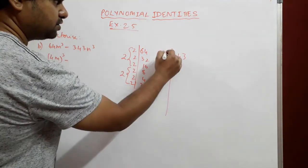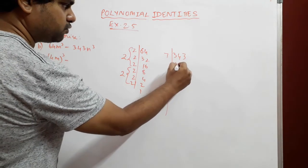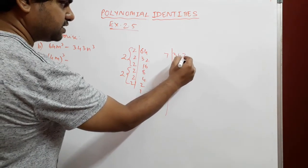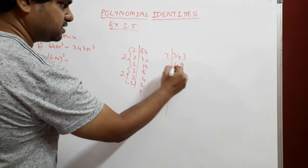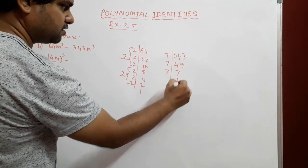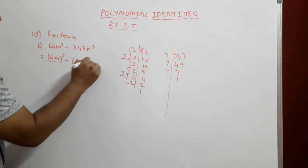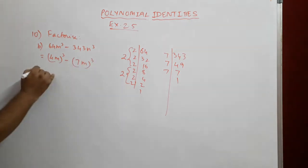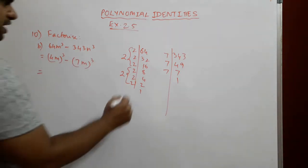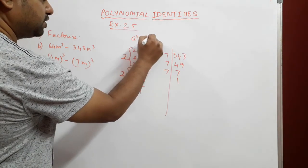343 goes in the 7 times table: 7 × 7 = 49, 7 × 49 = 343, so 343n³ = (7n)³. Now this is in the a³ - b³ form. The identity for a³ - b³ is (a - b)(a² + ab + b²).